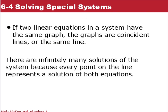Now if two linear equations in a system have the same graph, the lines are coincident lines, or the same lines. There are infinitely many solutions. If they're the same lines, any ordered pair will satisfy that because every point on the line will be a solution for both equations.